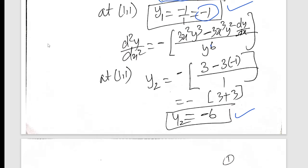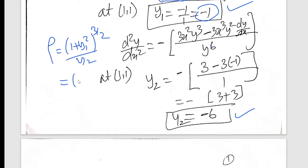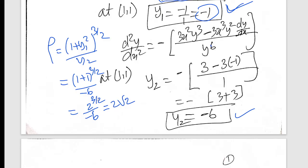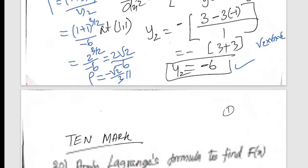Radius of curvature formula: ρ equals (1 plus y1 squared) whole power 3 by 2, divided by y2. So 1 plus y1: y1 is minus 1, minus 1 squared is plus 1, whole power 3 by 2, divided by y2 is minus 6. So 2 power 3 by 2 by minus 6. Now 2 power 3 is 8, and root of 8 is 2√2. So ρ equals 2√2 divided by minus 6, that is 2√2 by 3. This is the 5th mark.